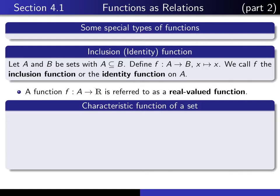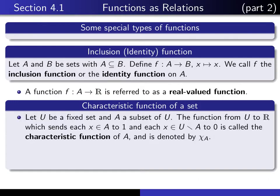Here's an example of a real-valued function that's quite important in applications. We call it the characteristic function of a set. So if U is any fixed set and A any subset of U, then the function from U to R, which sends each x in A to 1, and each x outside of A to 0, is called the characteristic function of A.